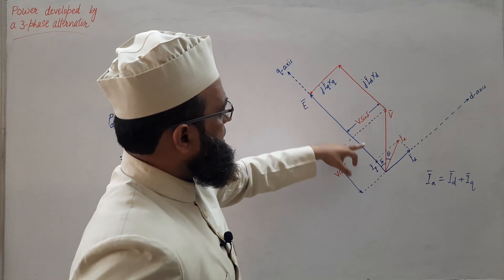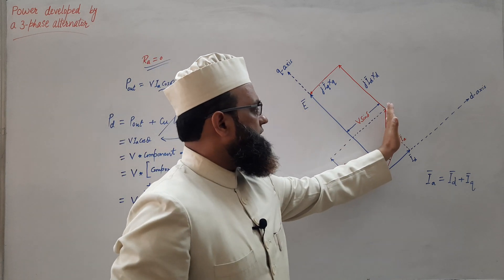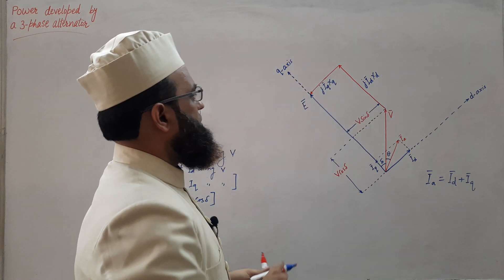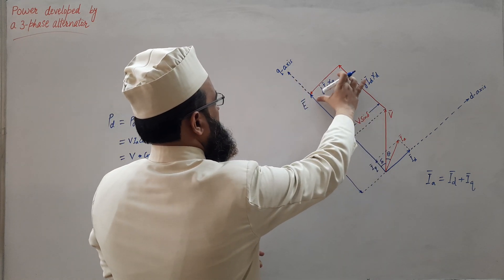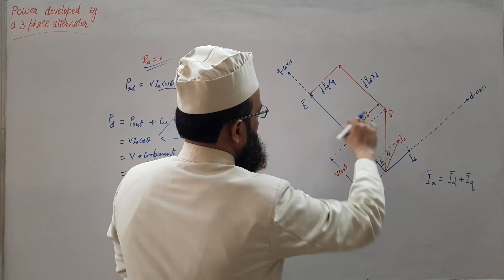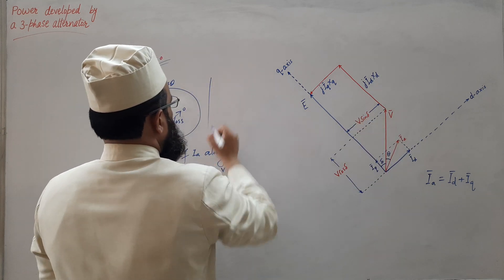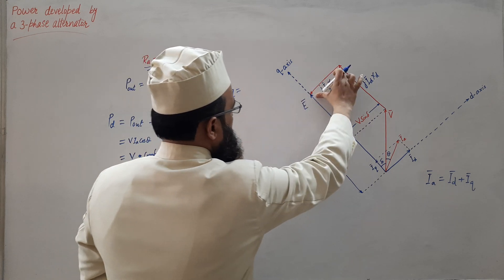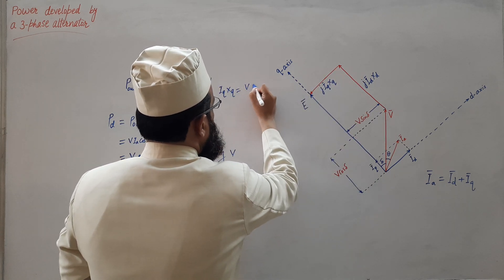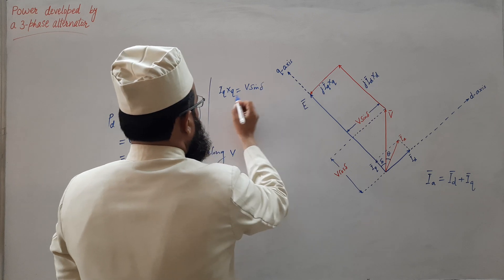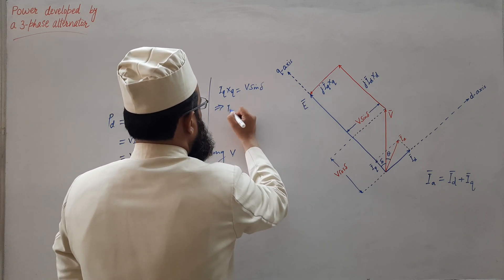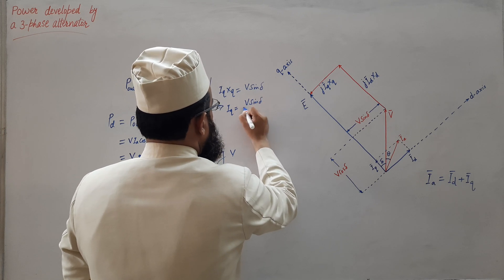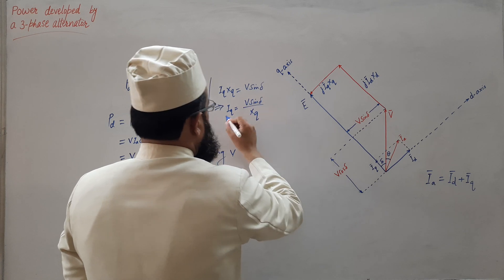From the phasor diagram, V·cos(δ) and V·sin(δ) are the components of V. From the diagram we can write iq·Xq = V·sin(δ), and therefore iq = V·sin(δ) / Xq.